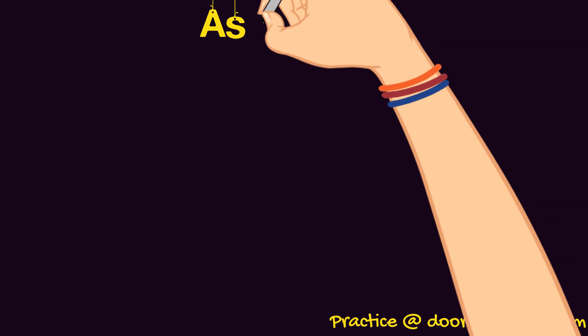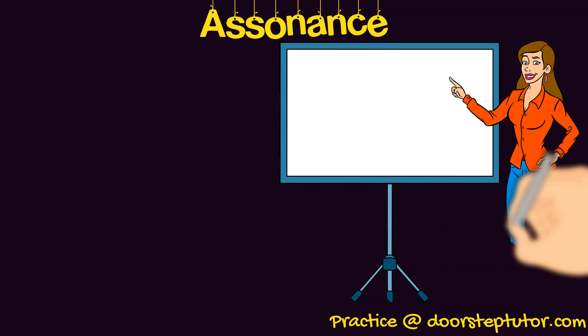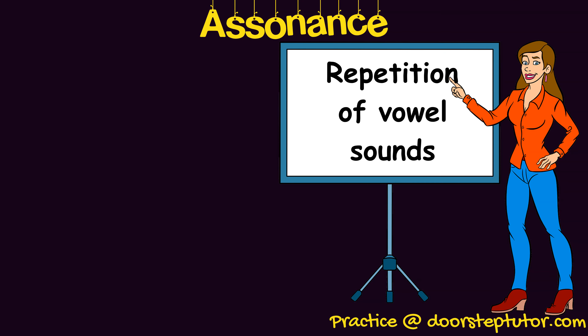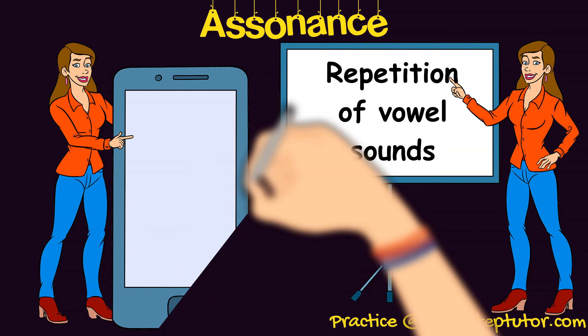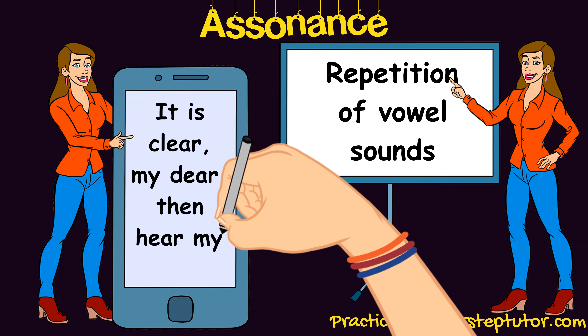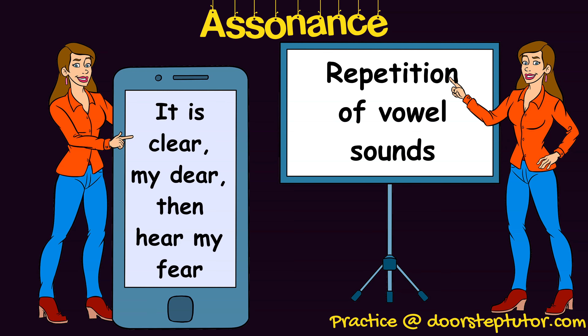Now we shall look into assonance. It signifies the repetition of vowel sounds. It is different from alliteration, which signifies the repetition of consonant sounds. The repetition of vowel sounds is assonance and the repetition of consonant sounds is alliteration. Example for assonance: 'It is clear, my dear, then hear my fear.' Can you hear the repeated vowel sound? Of course — then it is assonance.